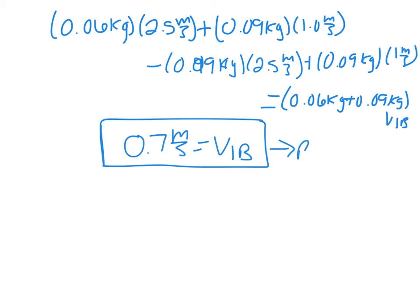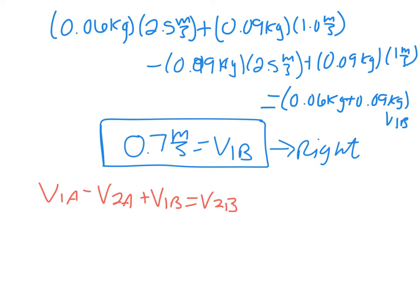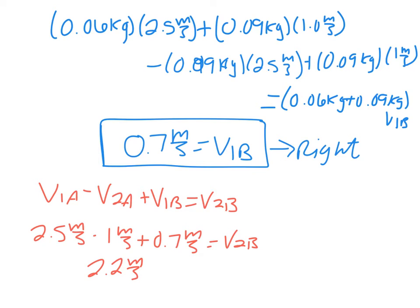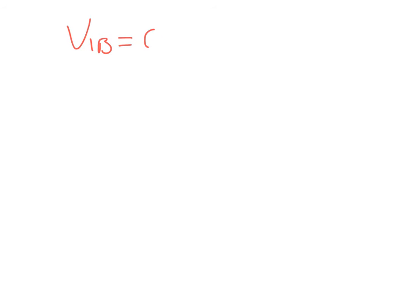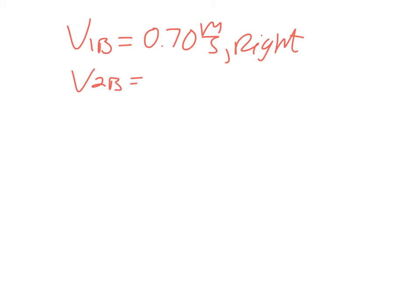V1B is positive, so the tennis ball is moving to the right. Now for V2B: we already established that V1A − V2A + V1B = V2B. So 2.5 − 1.0 + 0.7 = 2.2 m/s for V2B. This is also positive, so it's also moving to the right. Therefore, V1B = 0.70 m/s to the right, and V2B = 2.2 m/s to the right.